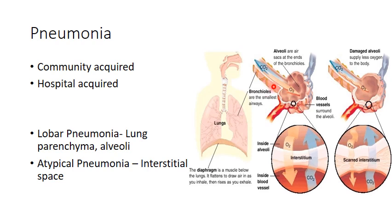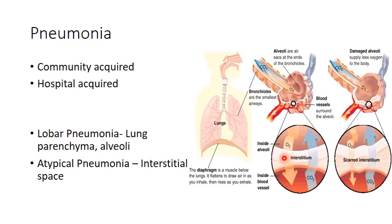These are the bronchioles, the smallest airways ending in air sacs called alveoli, which are surrounded by blood vessels. In the magnified image, we can see the alveoli — the inside part — the blood vessels, and the space in between called the interstitium or interstitial space. When a microorganism affects the alveoli, it is referred to as lobar pneumonia. When microorganisms infect the interstitial space, it is referred to as atypical pneumonia.